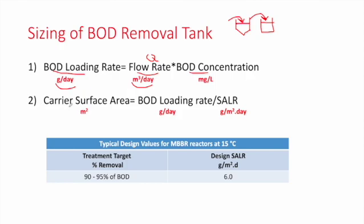Second, calculate the carrier surface area in square meters, equal to the BOD loading rate divided by the SALR — the Surface Aeration Loading Rate. From typical design values for MBBR reactors, for this two-stage process the SALR for BOD removal is 6 grams per square meter per day, which allows removal of 90 to 95% of BOD.